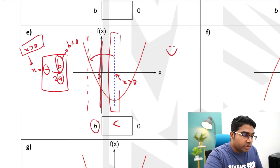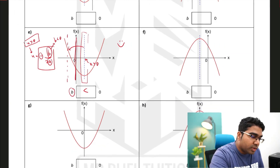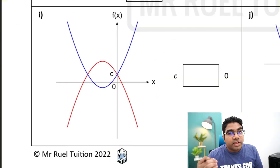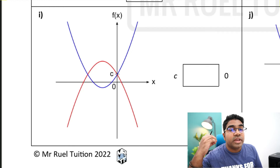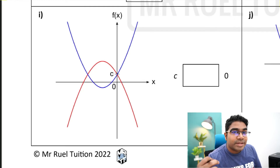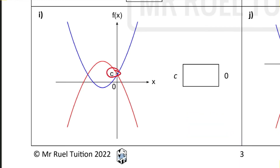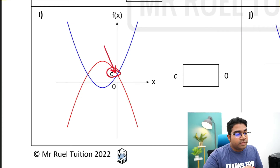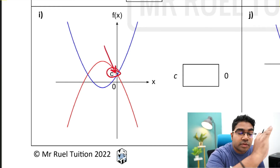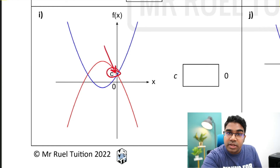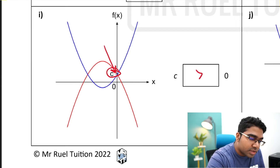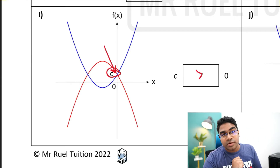Looking at the effect of c: the value of c represents the y-intercept of the curve. The value of c is wherever the graph cuts the y-axis. For this particular set of graphs, the value of c is positive — greater than 0.